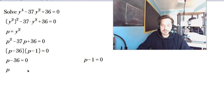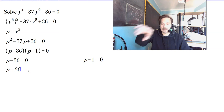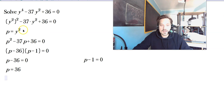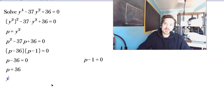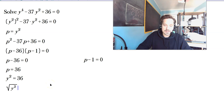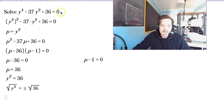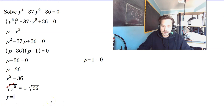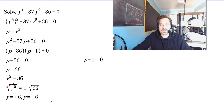From p minus 36 equals 0, p equals 36. Since p is y squared, y squared equals 36. Take square roots on both sides: plus or minus the square root of 36. The square root and the square cancel on the left, giving y equals positive 6 or y equals negative 6.